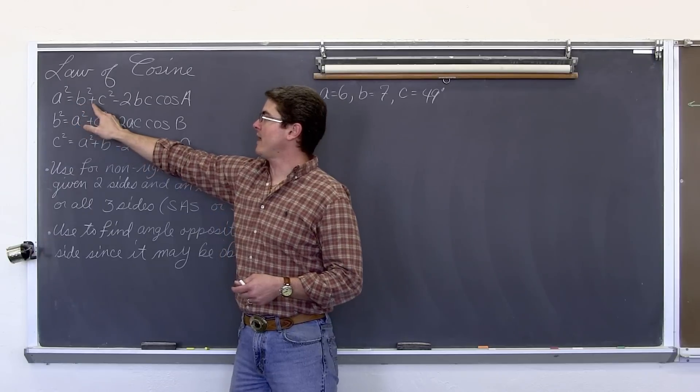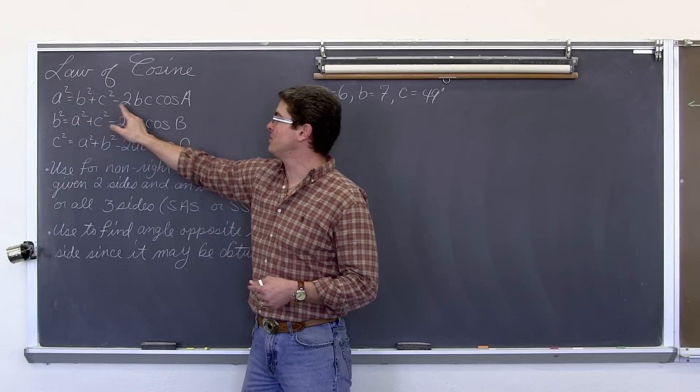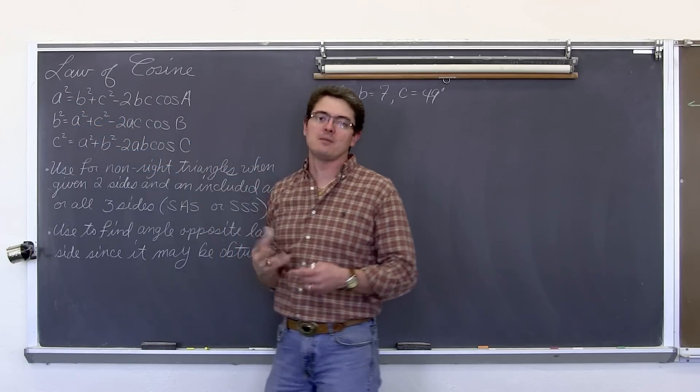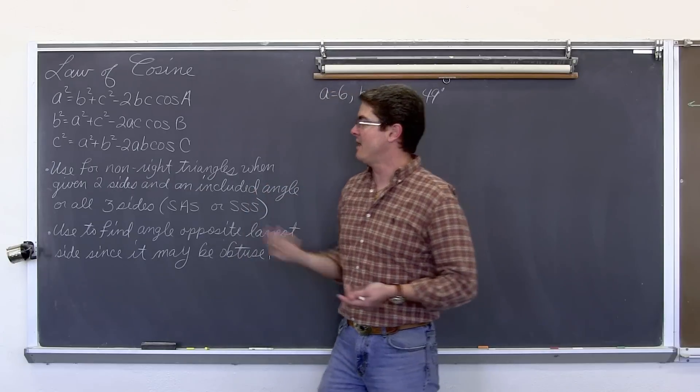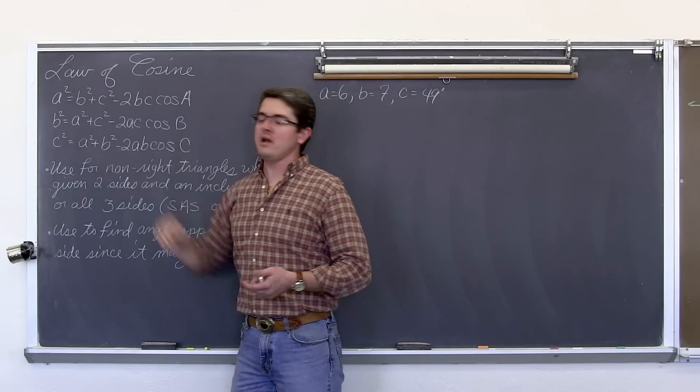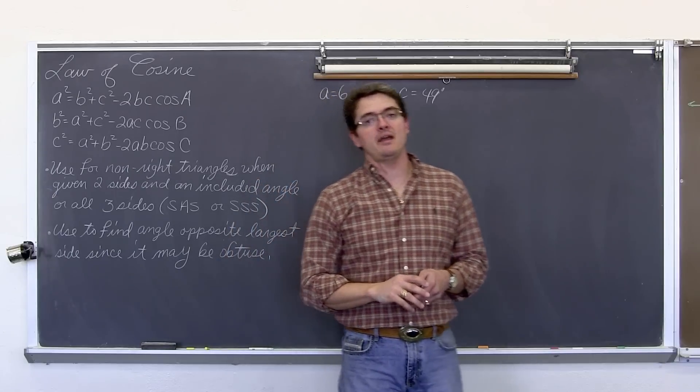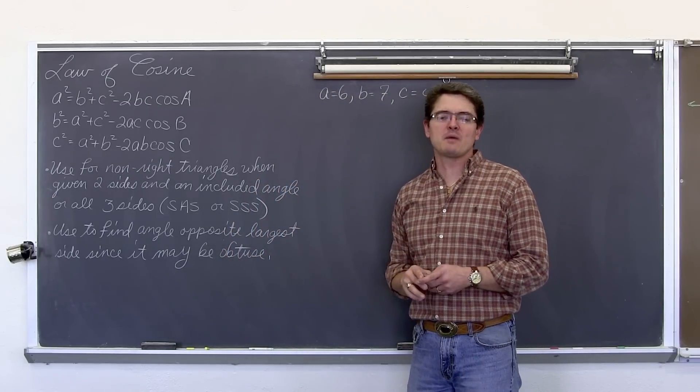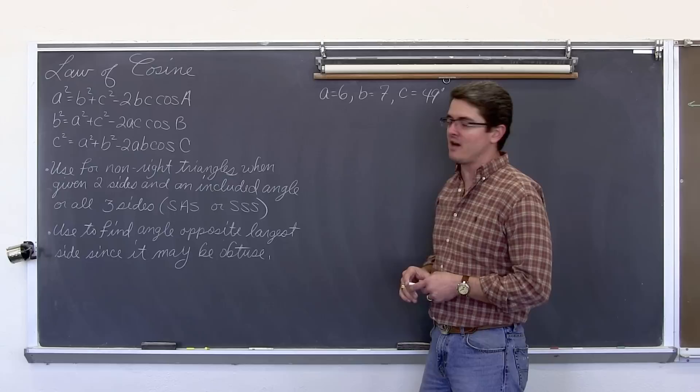And then everything else, the something squared plus something squared minus 2 times the same two somethings, that is just whatever is left. So if you are using side B and angle B, then everywhere else in the equation you are talking about sides of A and C. So there are three forms but really you can just memorize one of those formulas and you will be just fine.